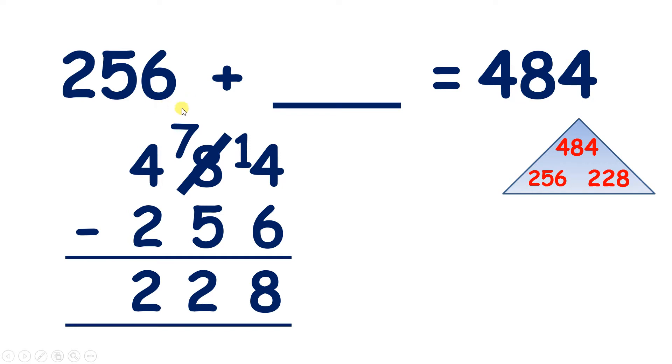So 256 plus 228 equals 484. And if we wanted to check that, we could do 256 plus 228, and make sure that our answer came to 484.